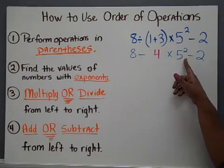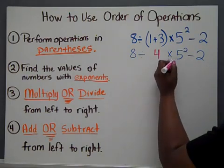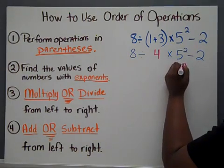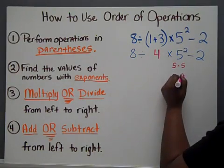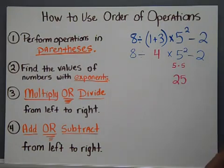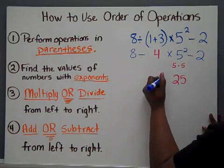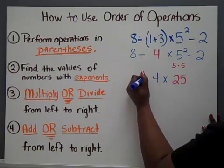Remember, exponents tell you how many times to multiply the base. Therefore, 5 squared turns out to be 25, and we'll copy the rest of this numerical expression.